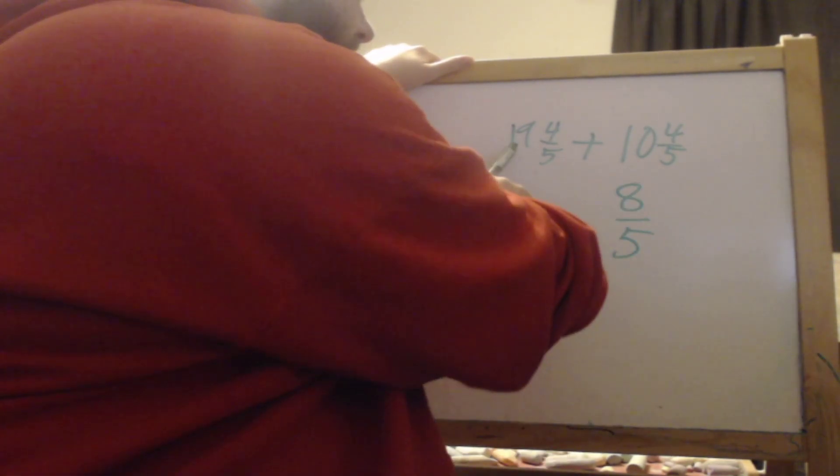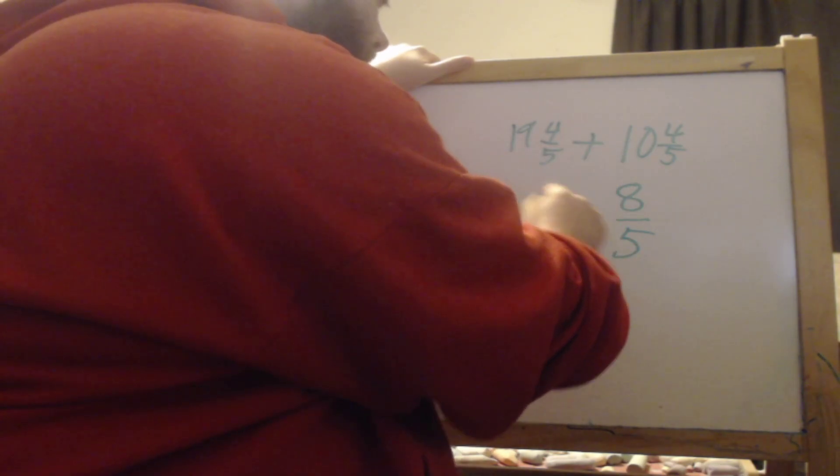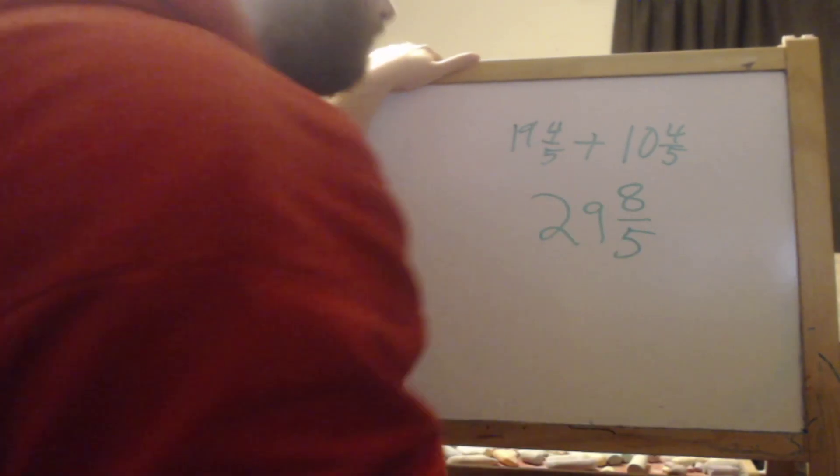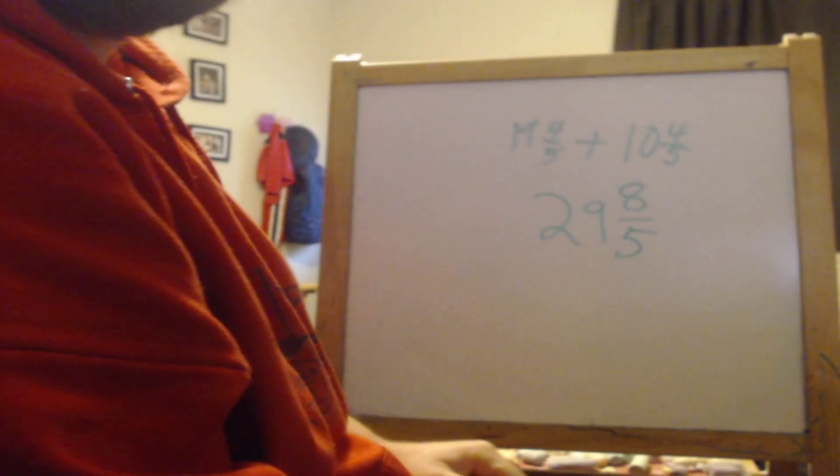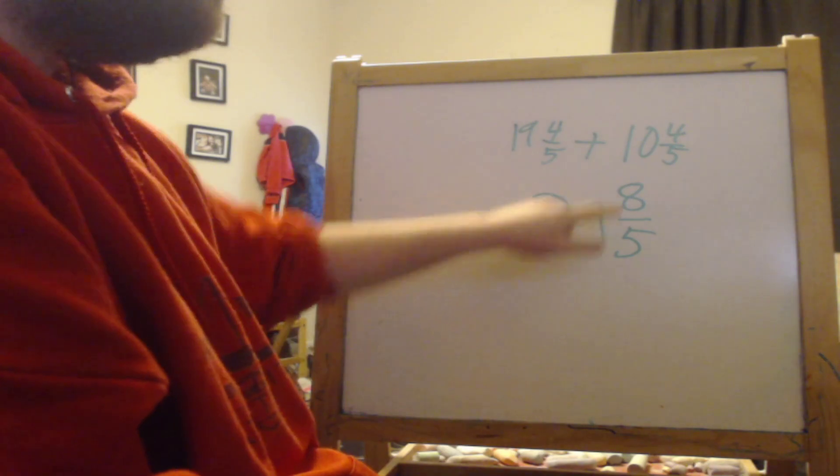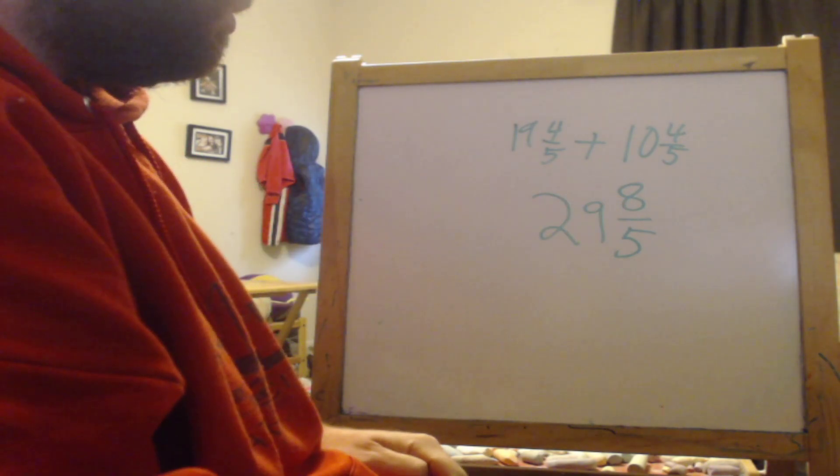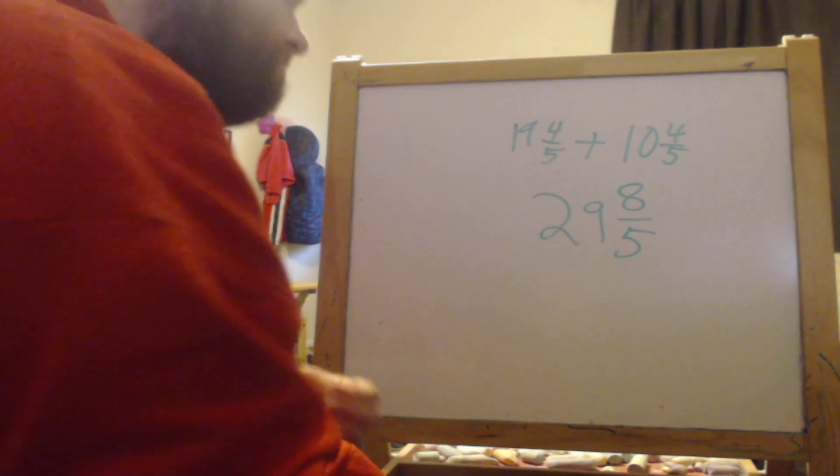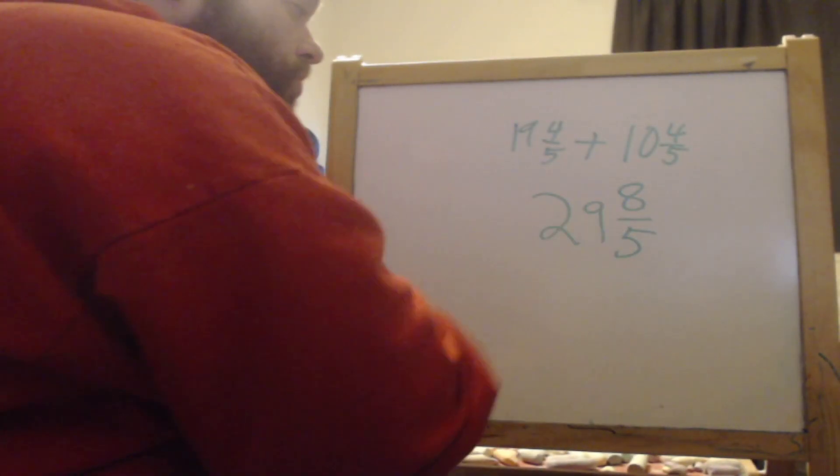And then we can add 19 and 10, and that is 29 and 8/5. But this is a mixed number, and you can't have an improper fraction in the mixed number. So we have to convert 8/5 into a mixed number to add to this. So 8 over 5,